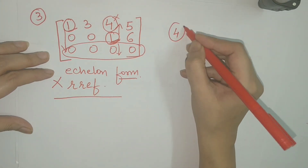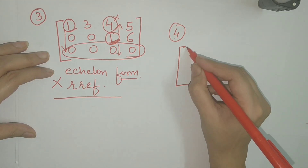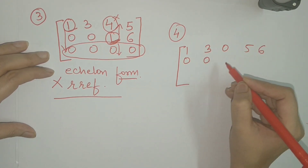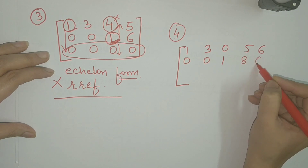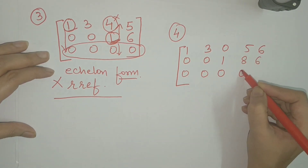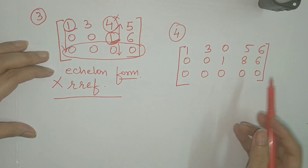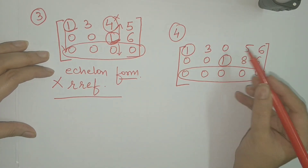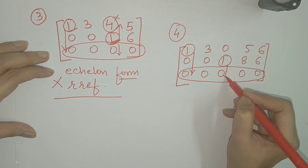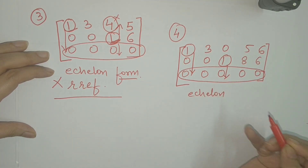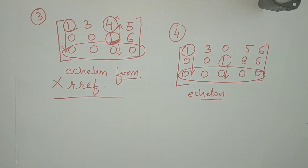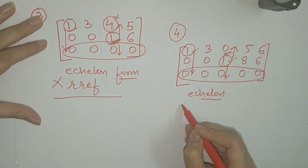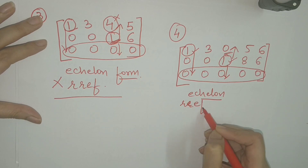Let us take one last example. Consider the matrix [[1,3,0,5,6],[0,0,1,8,6],[0,0,0,0,0]]. The row of all zeros is at the bottom. The leading entries are 1 and 1, and the entries below the leading entries are 0, so it is in echelon form. Furthermore, the leading entries are 1 and the entries above the leading entries are also 0. So this matrix is in reduced row echelon form.